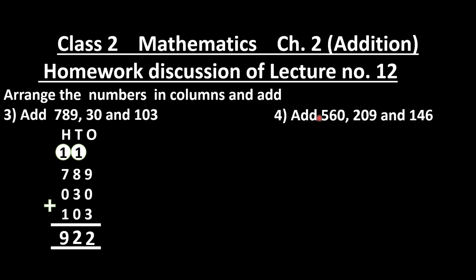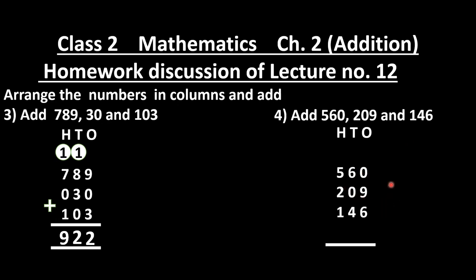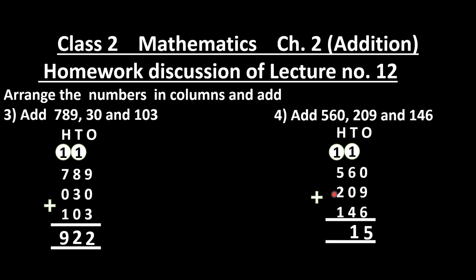Question 4: add 560, 209 and 146. Write ones, tens, hundreds. At ones: 9 plus 6 — count: 10, 11, 12, 13, 14, 15 — write 5, carry 1. At tens: 6 plus 4 — count: 7, 8, 9, 10, plus carry 1 is 11 — write 1, carry 1. At hundreds: 5 plus 2 is 7, plus 1 is 8, plus carry 1 is 9. Our answer is 915.